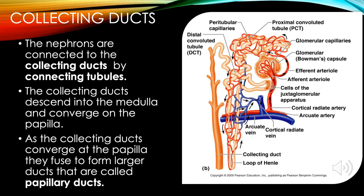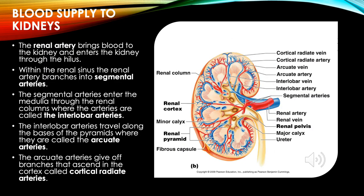The nephrons are connected to the collecting ducts by connecting tubules. The collecting ducts descend into the medulla and converge on the papilla. As the collecting ducts converge at the papilla, they fuse to form larger ducts called papillary ducts.